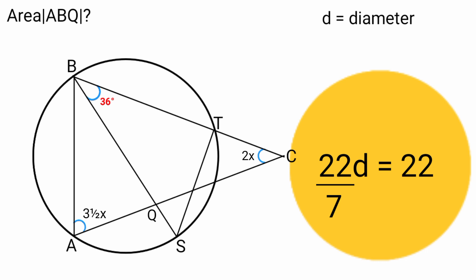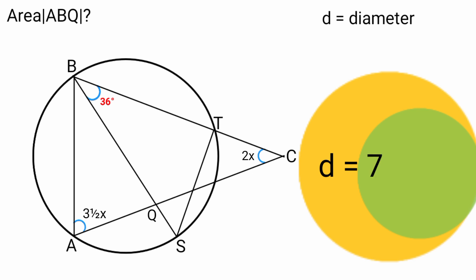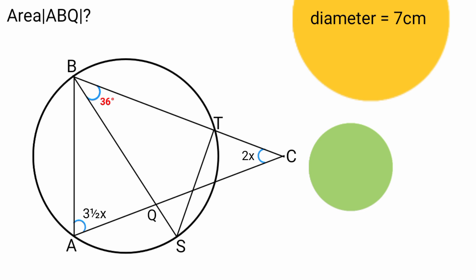Making D the subject, we divide both sides by 22 over 7, so D equals 22 divided by 22 over 7, which is the same as 22 times 7 over 22. The 22s cancel, leaving the diameter equal to 7 centimeters. Therefore, line BS is 7 centimeters in length.